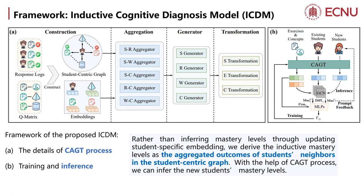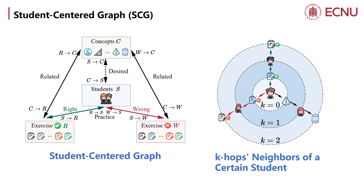With the help of the CEDD process, we can infer new students' mastery levels. The left side shows our proposed Student Center Graph, which includes four types of relationships: right, wrong, desire, and related. The right side demonstrates how one can obtain the k-hop neighbors of a particular student based on the ICG.